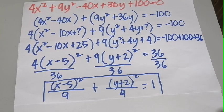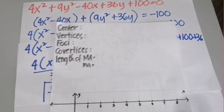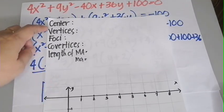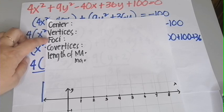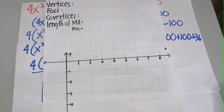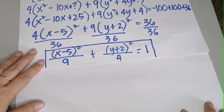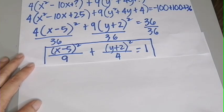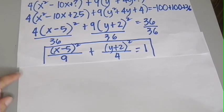Now we are ready to graph the equation x minus 5 quantity squared all over 9 plus y plus 2 quantity squared all over 4 equals 1. In graphing conic sections, you always have two options. The first is to determine all elements — coordinates for center, vertices, foci, co-vertices — using the formulas, then plot these points on the Cartesian plane. If you don't memorize the formulas, just determine the center and the values of a, b, and c, then graph.